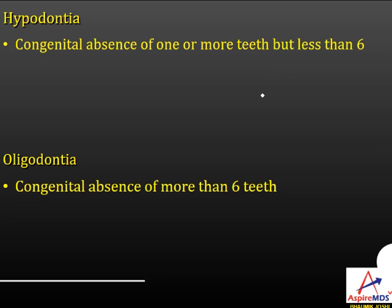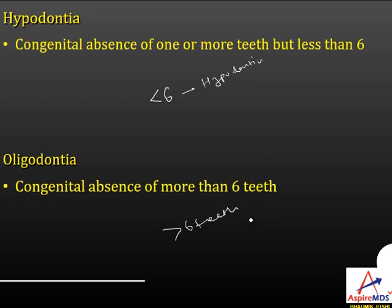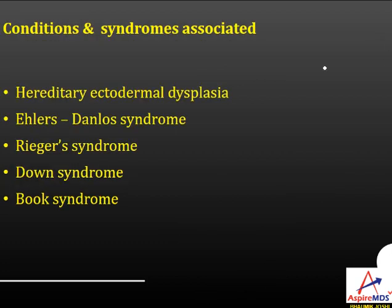If more than six teeth are missing but not all, it is called oligodontia. If all are missing, it is total anodontia. Conditions and syndromes associated with anodontia include Hereditary Ectodermal Dysplasia, Ehlers-Danlos syndrome, Rieger syndrome, Down syndrome, and Book syndrome. Pseudo anodontia is the condition in which teeth are present within the jaw but not erupted — this includes impacted and embedded teeth. False anodontia is when teeth are missing from the oral cavity because they have been extracted or have exfoliated.